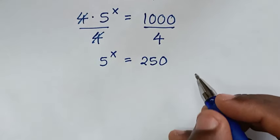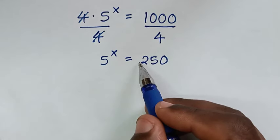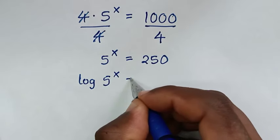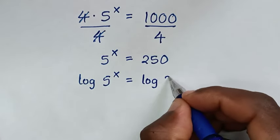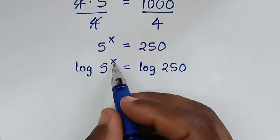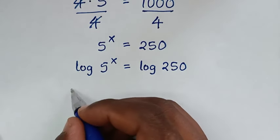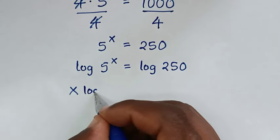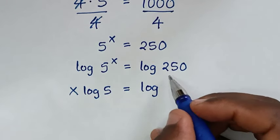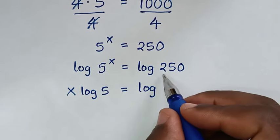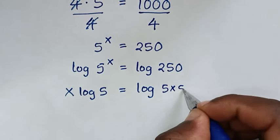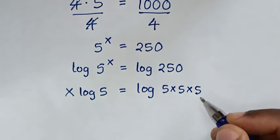In the next step we will apply log on both sides. So it will be log of 5 power of x is equal to log of 250. Then this power of x will move to the front, so it will be x times log of 5 is equal to log of 250.